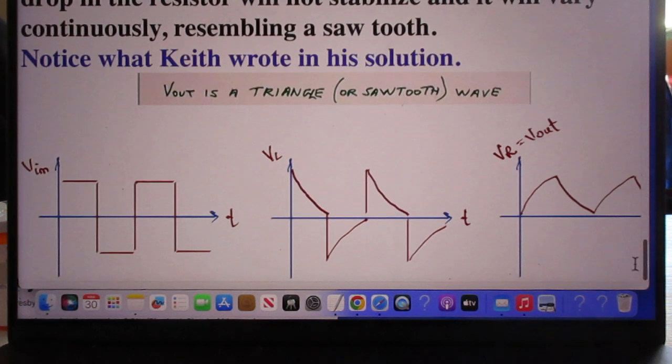Notice what Keith yesterday wrote. V out is a triangle or a sawtooth wave. And here you see on the right side the sawtooth wave, the sawtooth wave.